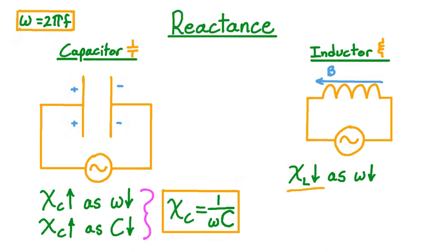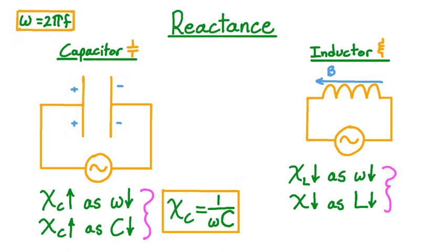In other words, the inductive reactance will decrease as angular frequency decreases. Furthermore, the smaller the inductance of the inductor, the smaller the maximum magnetic field, and the faster this field can be built up, and thus the smaller the opposition to the current. So the inductive reactance will be smaller for smaller inductances. For both of these relationships, a smaller value of one quantity corresponds to a smaller value of another quantity and vice versa — this is characteristic of a directly proportional relationship. And so the size of the inductive reactance is equal to the angular frequency times the inductance.